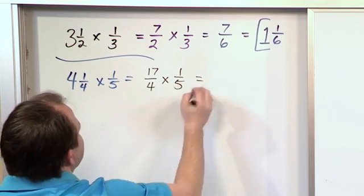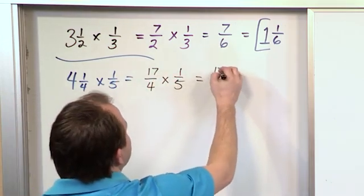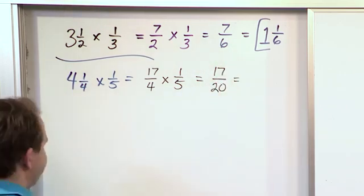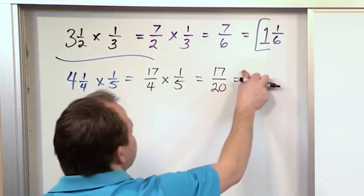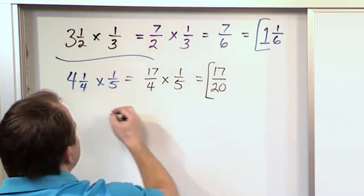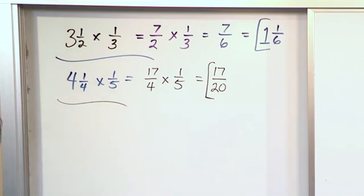Same as we always have. And now 17 × 1 becomes 17, 4 × 5 becomes 20. And then this is 17/20. Now there's nothing else to do here because it's not an improper fraction and I can't simplify this anymore. So we just circle the answer, 17/20.